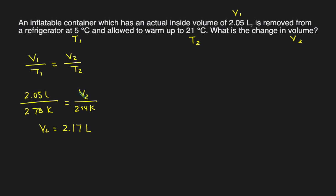But this question is not just asking us for the final volume, it's asking what's the change in volume. So we'll take the final volume of 2.17 minus the original volume, 2.05, and then that'll give us 0.12 liters. So that was an increase in volume, which makes sense because the temperature was increasing from 5 degrees to 21 degrees.